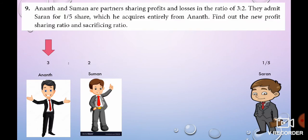Sum No. 9: Anandhan and Suman are partners sharing profit and loss in the ratio of 3 is to 2. They admit Saran for 1/5th share, which he acquires entirely from Anandhan. Find out the new profit sharing ratio and sacrificing ratio. Old ratio is 3 by 5 and 2 by 5.